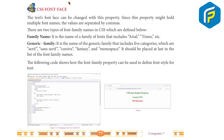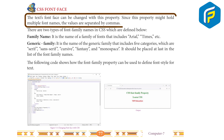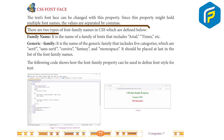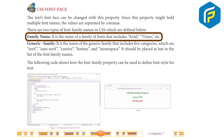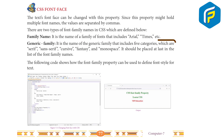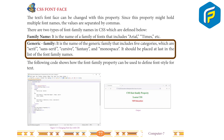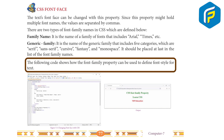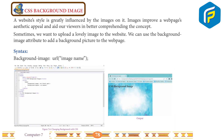CSS font-face: the text font face can be changed with this property. Since this property might hold multiple font names, the values are separated by commas. There are two types of font family names in CSS: family name — it is the name of a family of fonts that includes Arial, Times, etc.; and generic family — it is the name of the generic family that includes five categories: serif, sans-serif, cursive, fantasy, and monospace. It should be placed last in the list of font family names.